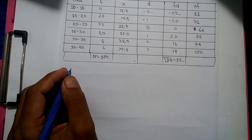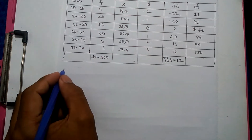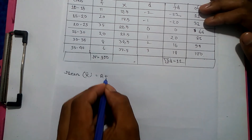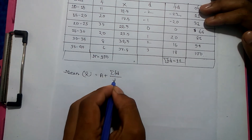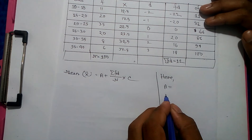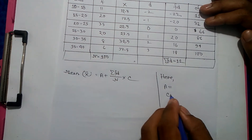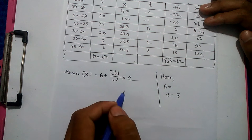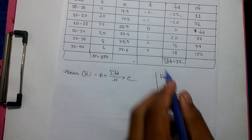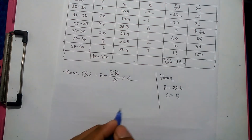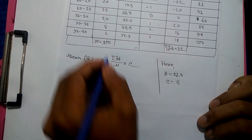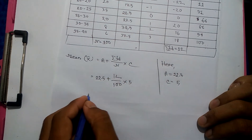So starting with the mean — mean X-bar. The progress formula is: X-bar equals a plus summation FD divided by n, into c. Here, 'a' is the assumed mean, summation FD is the sum of frequency times deviation, and n is the total frequency. So airman — the summation FD value — goes into the formula for parts.